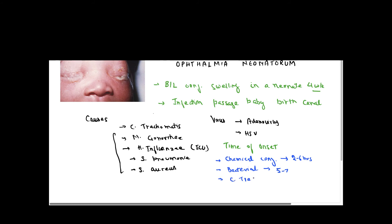Chlamydia trachomatis is a slowly growing pathogen and causes onset within two to three weeks — a slower onset. Neisseria gonorrhoeae has an acute onset within 24 to 48 hours. Herpes Simplex Virus takes approximately two weeks, Adenovirus around one week, and other bacteria approximately five to seven days.